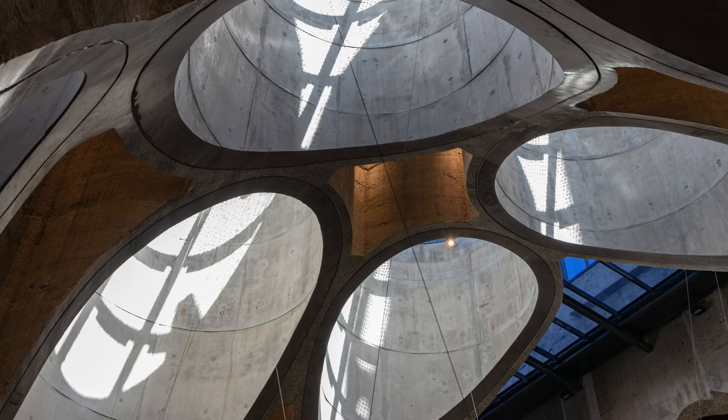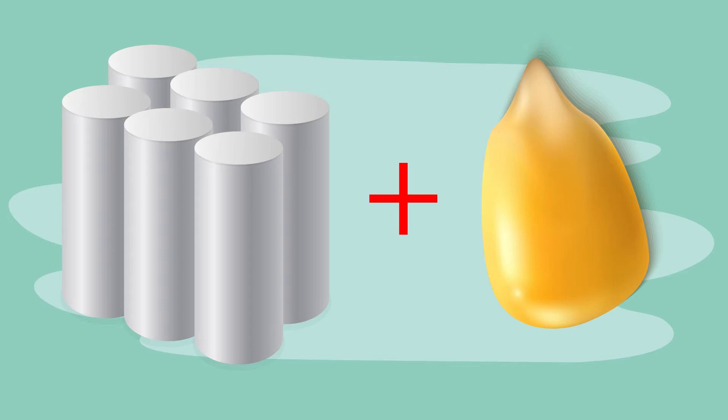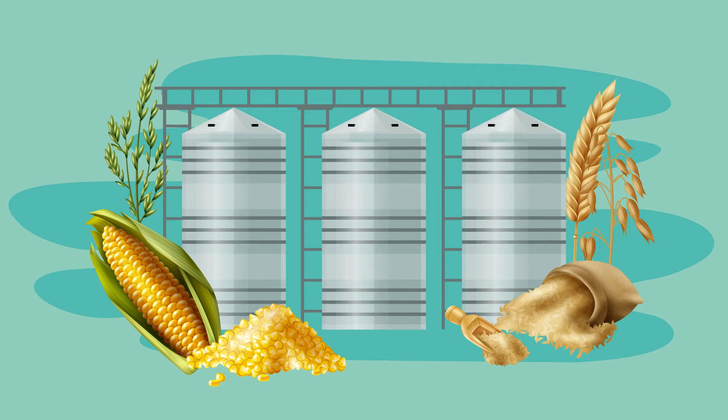Often architects combine geometric and organic shapes to create visually interesting dwelling spaces. One of my favorite buildings is the Zeitz MOCAA Art Museum in Cape Town, South Africa. Architect Thomas Heatherwick successfully combined geometric and organic shapes. The museum used to be a grain silo and he was asked to change it into an art museum.